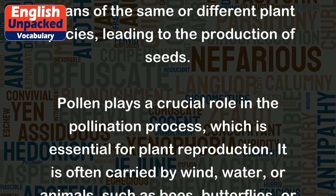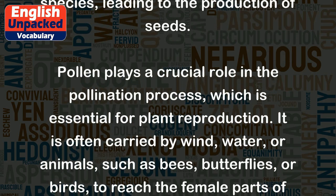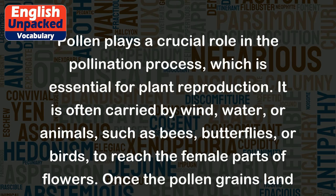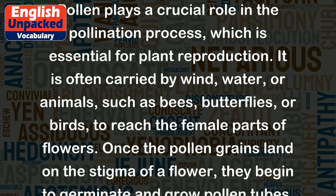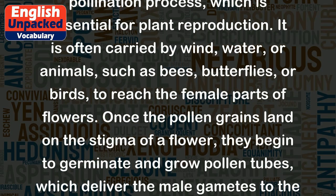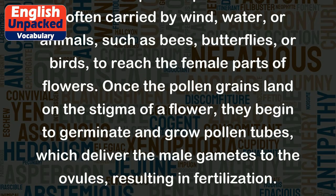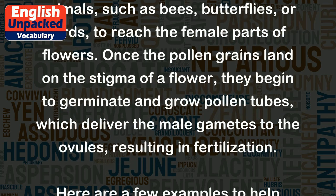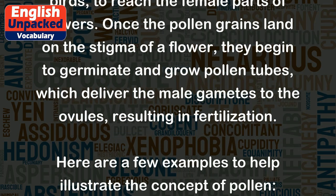It is often carried by wind, water, or animals, such as bees, butterflies, or birds, to reach the female parts of flowers. Once the pollen grains land on the stigma of a flower, they begin to germinate and grow pollen tubes, which deliver the male gametes to the ovules, resulting in fertilization.